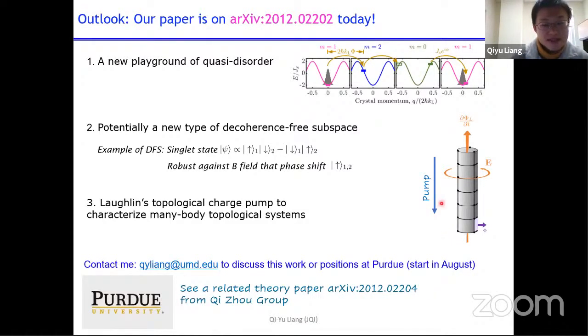Our paper is on arXiv today. You can check it out if you are interested. And there's a related theory paper just next to our paper on the arXiv. I'm moving to Purdue in August. I'm, of course, looking for postdocs and graduate students. If you are interested in this work or you know somebody who might be interested in working at Purdue, please help me spread the word or contact me. So thank you for your attention.